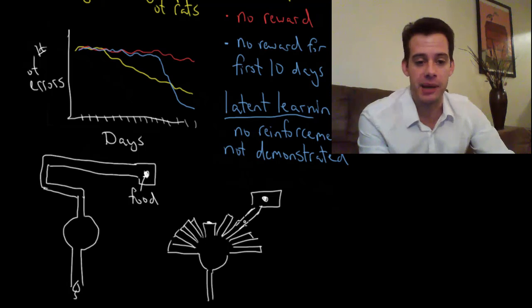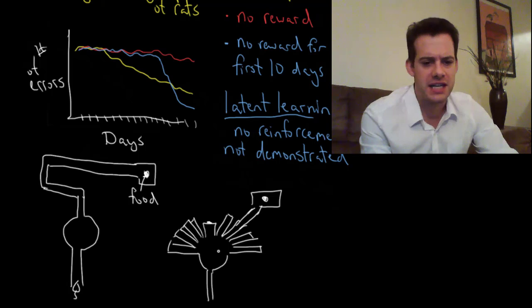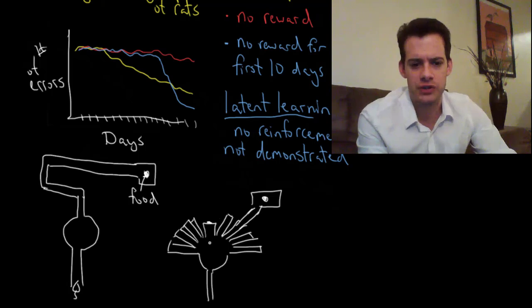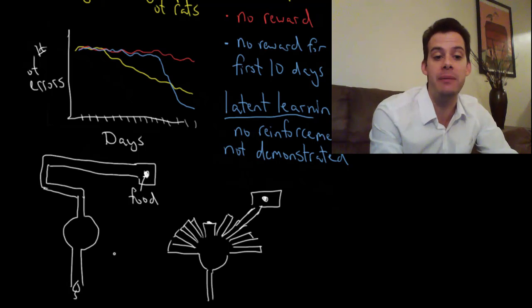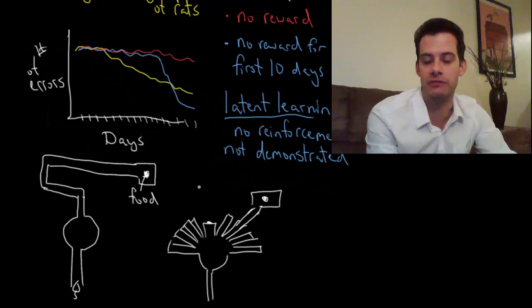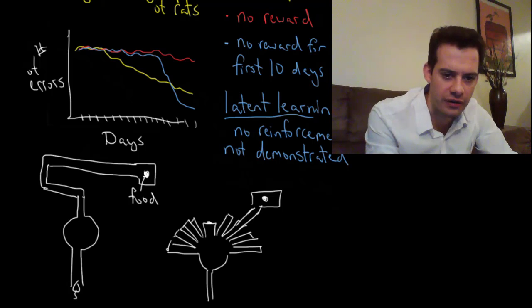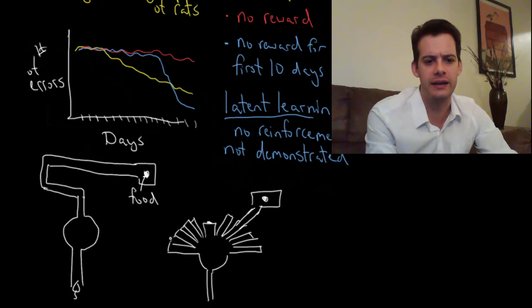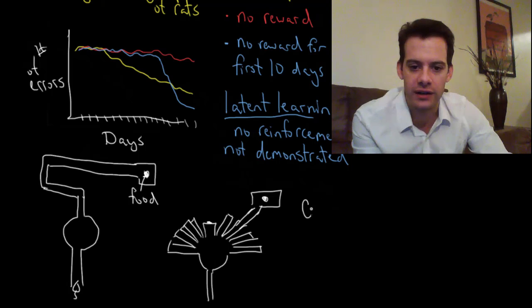So the question is what would the rat do? The traditional behaviorist explanation would be the rat runs in, tries to go straight, that doesn't work. Maybe stimulus generalization will occur, the rat will choose the most similar behavior. Or maybe the first turn that was reinforced was turning left, so the rat will turn left and try going that way. That's not what happened. What they found in this study was the rat actually chose the correct corridor. This showed the idea of a cognitive map.